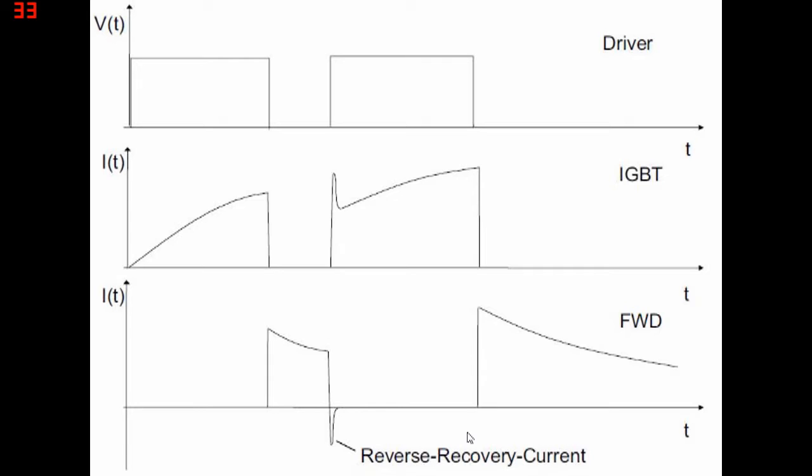Traditional silicon diodes do something interesting. When they're in their blocking state, it takes some actual charge to get them into their conducting state. And likewise, when they're in their conducting state, it takes some actual charge to get them back into their blocking state.